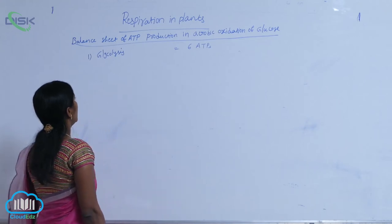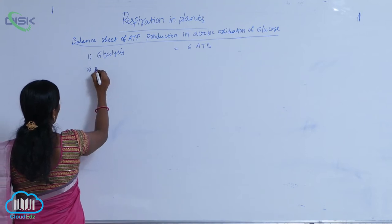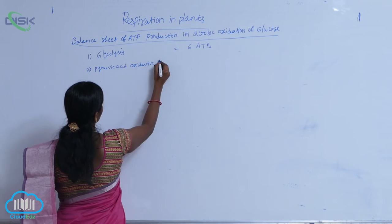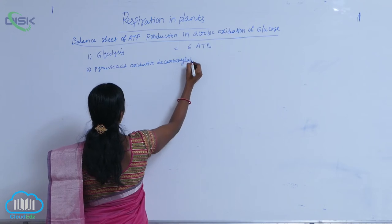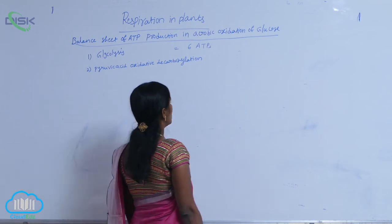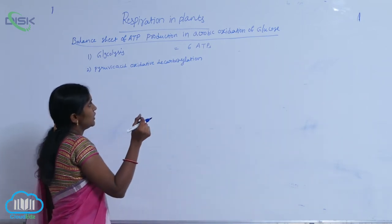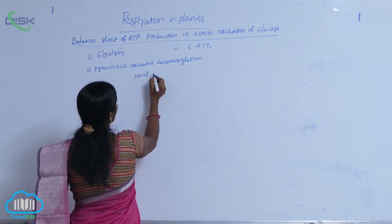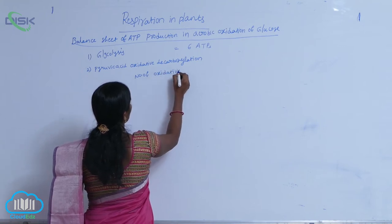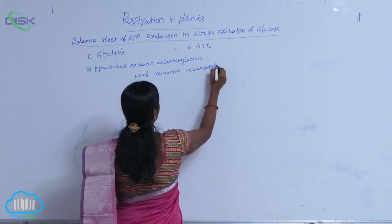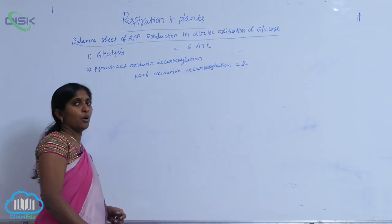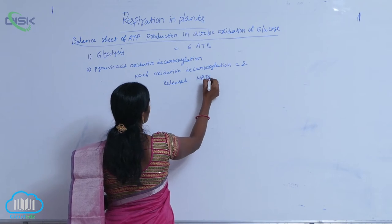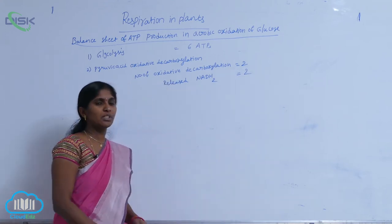6 ATPs are released. Coming to the next step — pyruvic acid — oxidative decarboxylation. For one glucose molecule, how many oxidative decarboxylation reactions are carried out? 2. So, the number of oxidative decarboxylations is 2. How many NADH₂s are released? 2 NADH₂s are released.